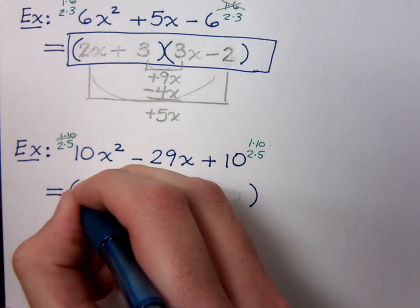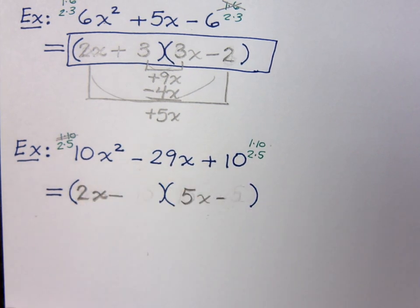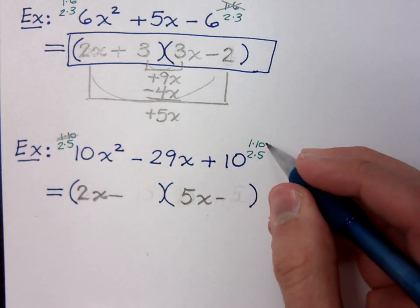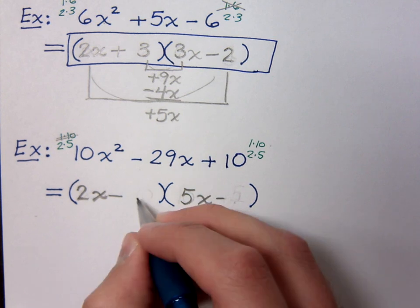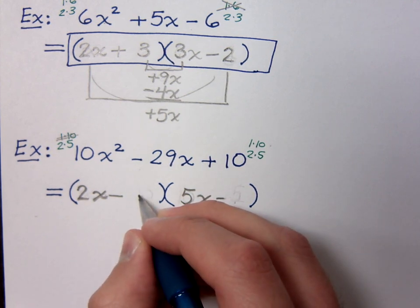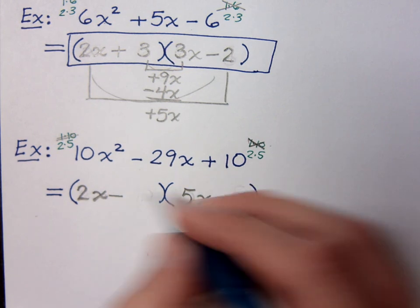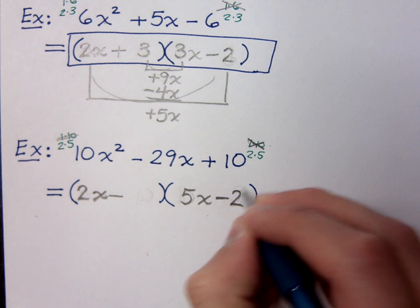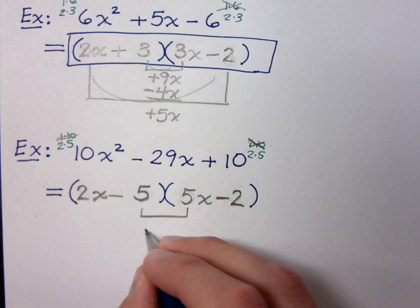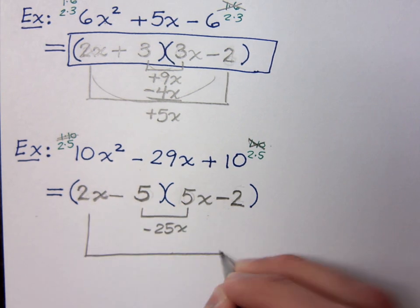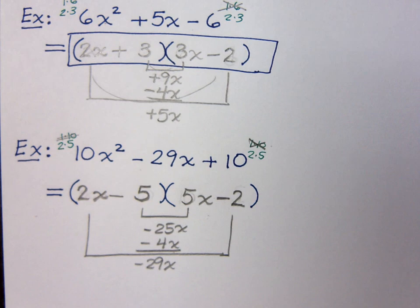So 10x squared must factor using 2x and 5x. Trying 1 and 10: the 10 can't go with the 5x — common factor of 5 — and it can't go with the 2x — common factor of 2. So 1 and 10 don't work at all. That leaves 2 and 5. The 2 cannot go with the 2x, so it must go with the 5x, and the 5 goes with the 2x. Checking: inside gives negative 25x, outside gives negative 4x — altogether negative 29x. Everything checks out — that's the correct factorization.